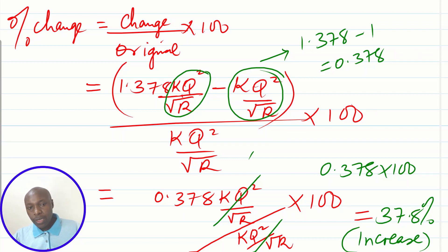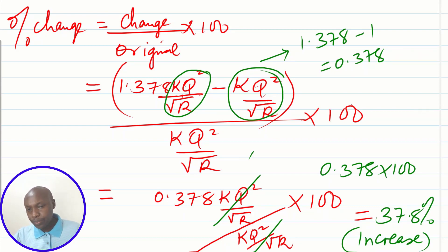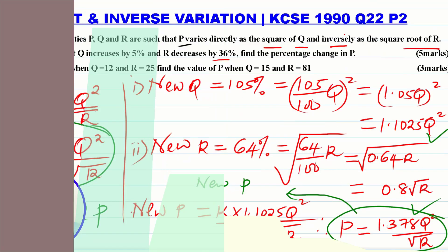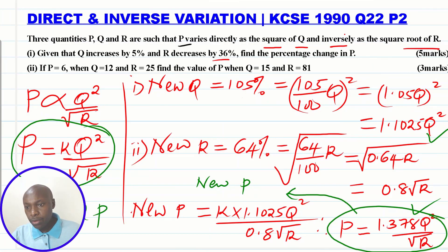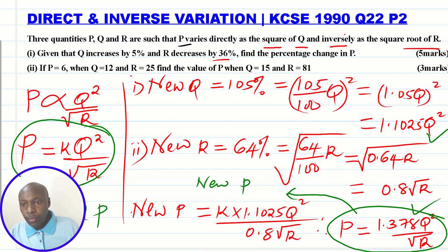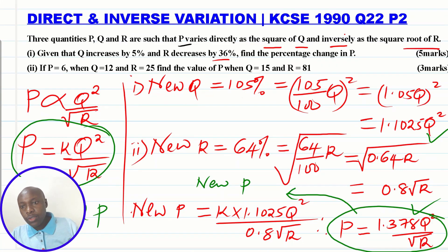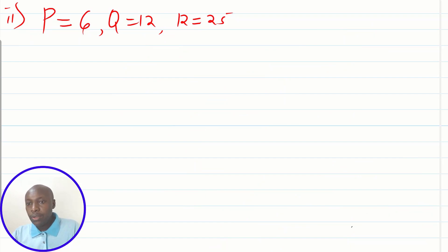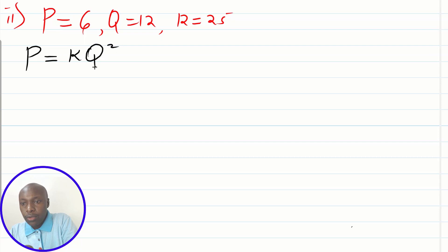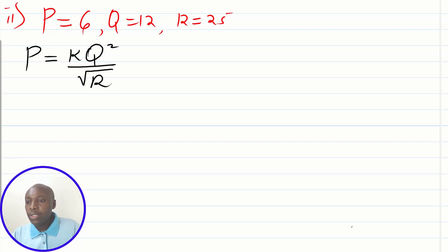That is the percentage change — we take the new p minus the original p, divide by the original p, and multiply by 100. That completes part one. Moving to part two: p = 6 when q = 12 and r = 25. We substitute these values into the equation p = kq²/√r to find the constant of proportionality k.